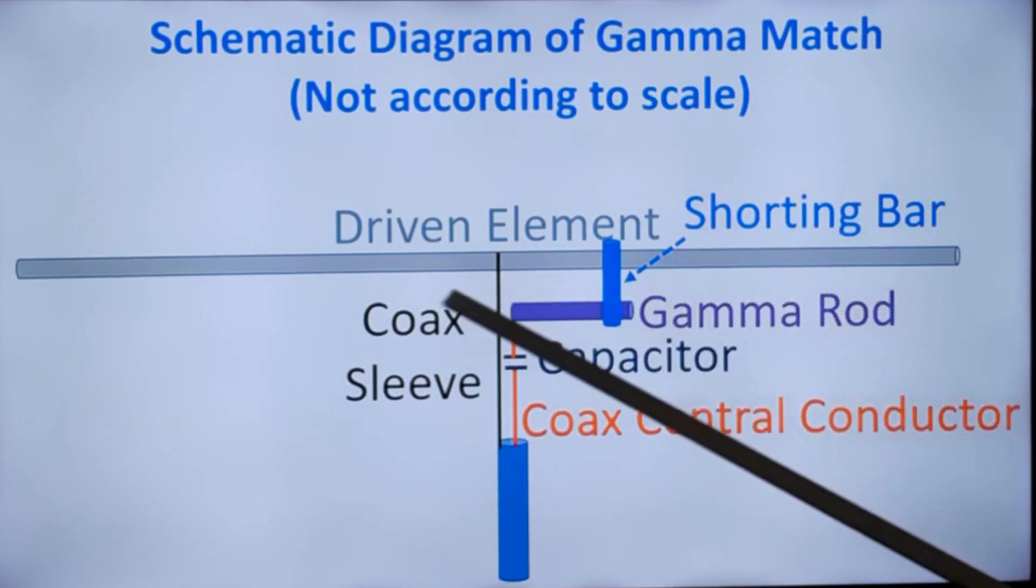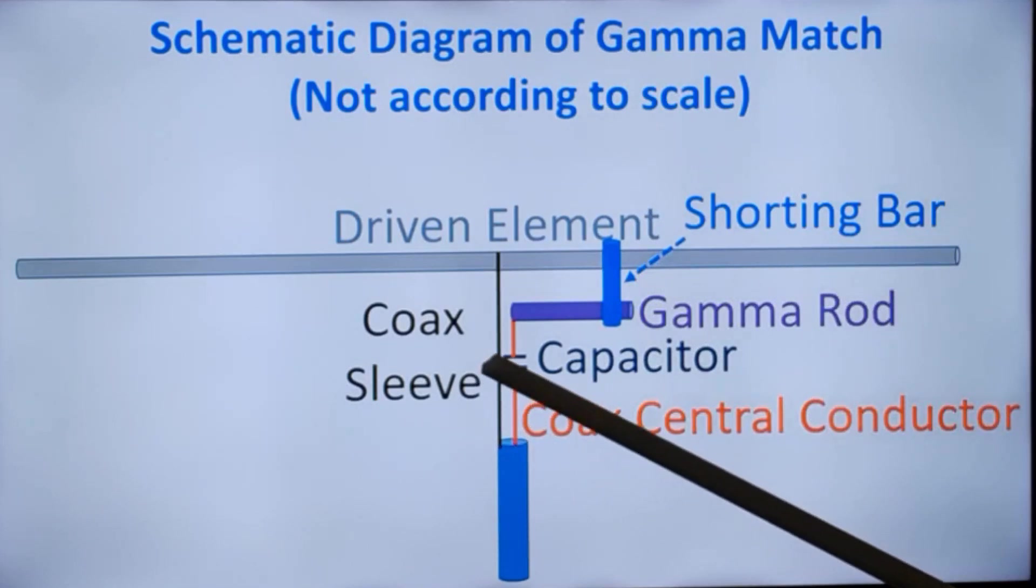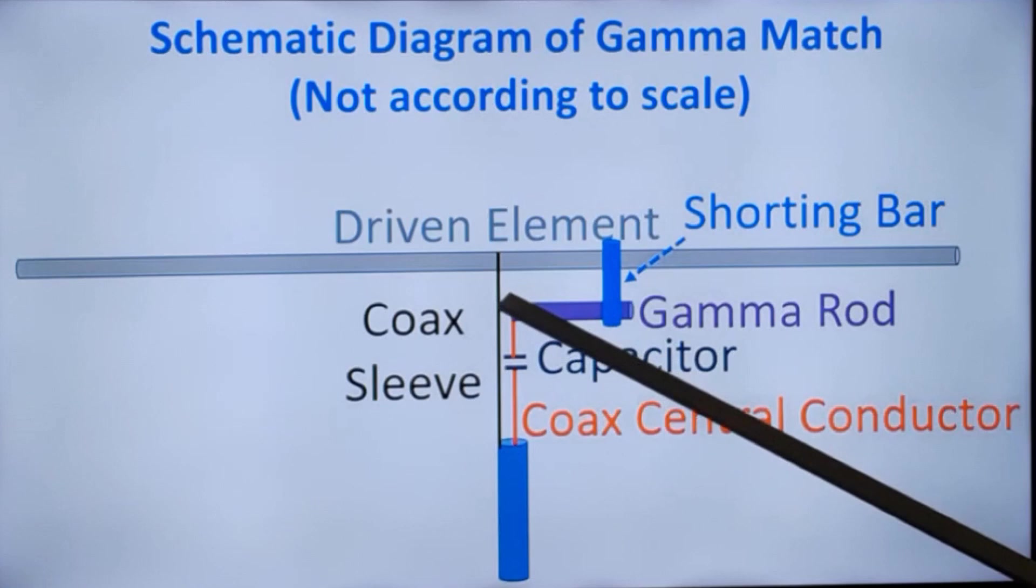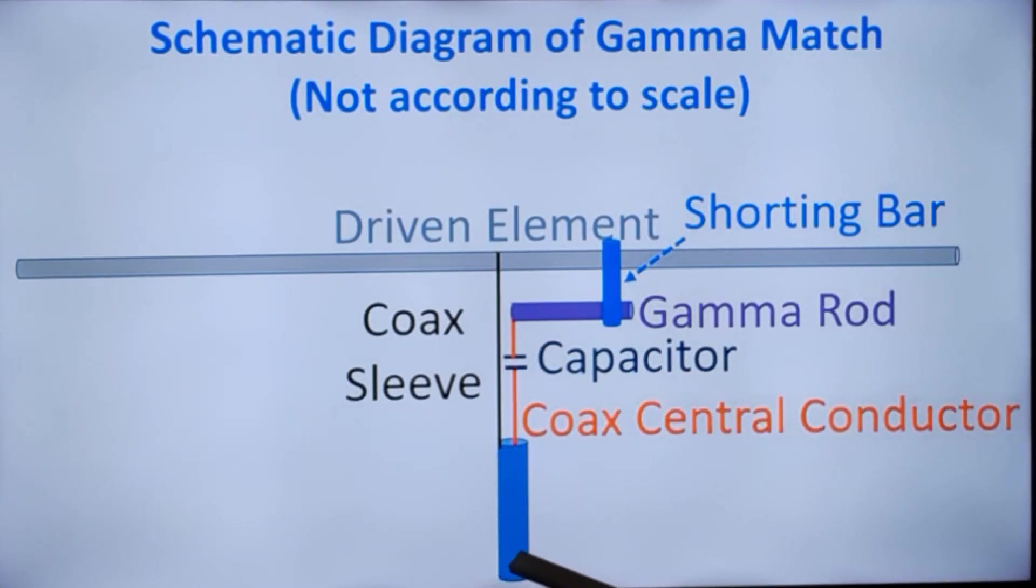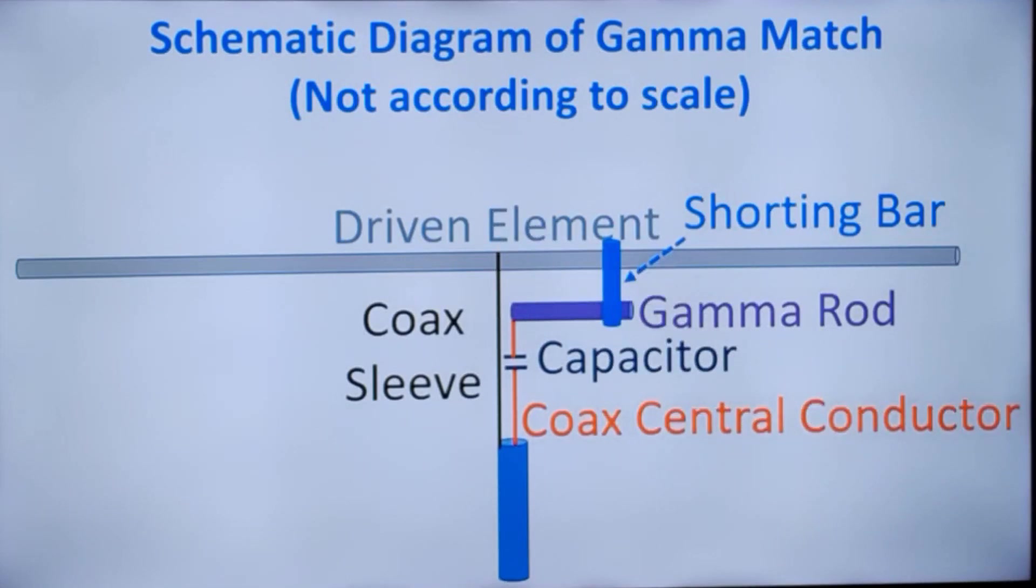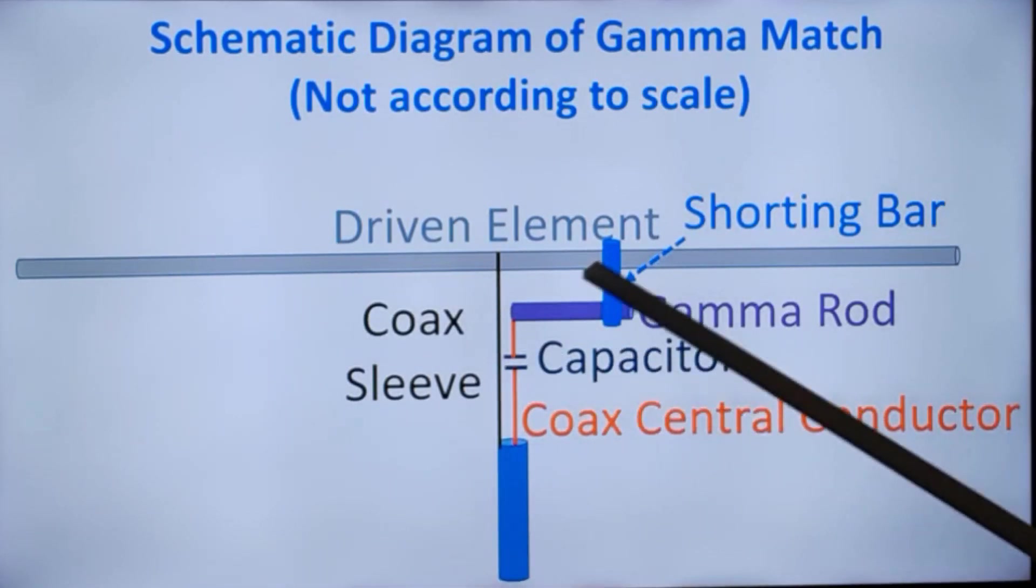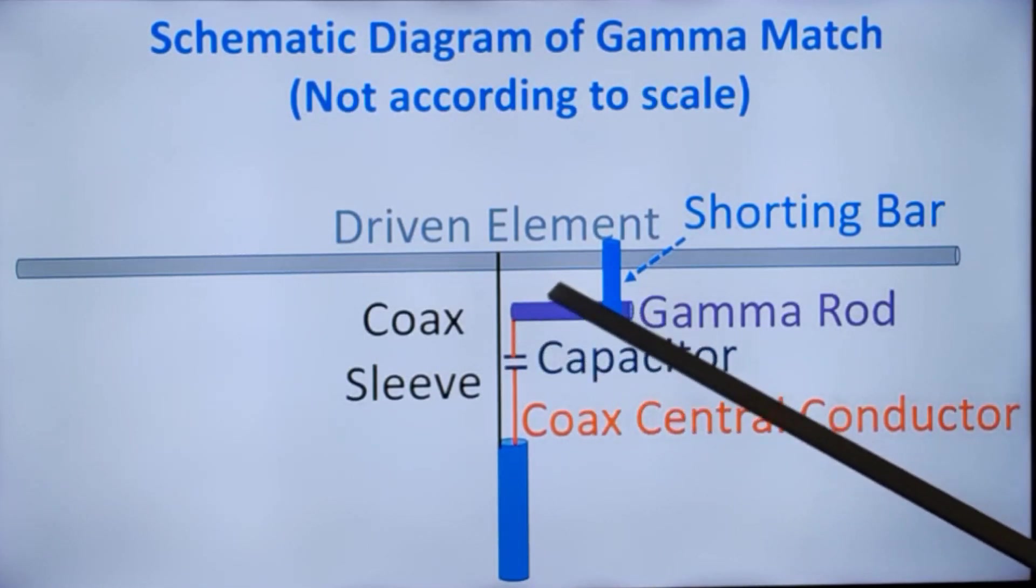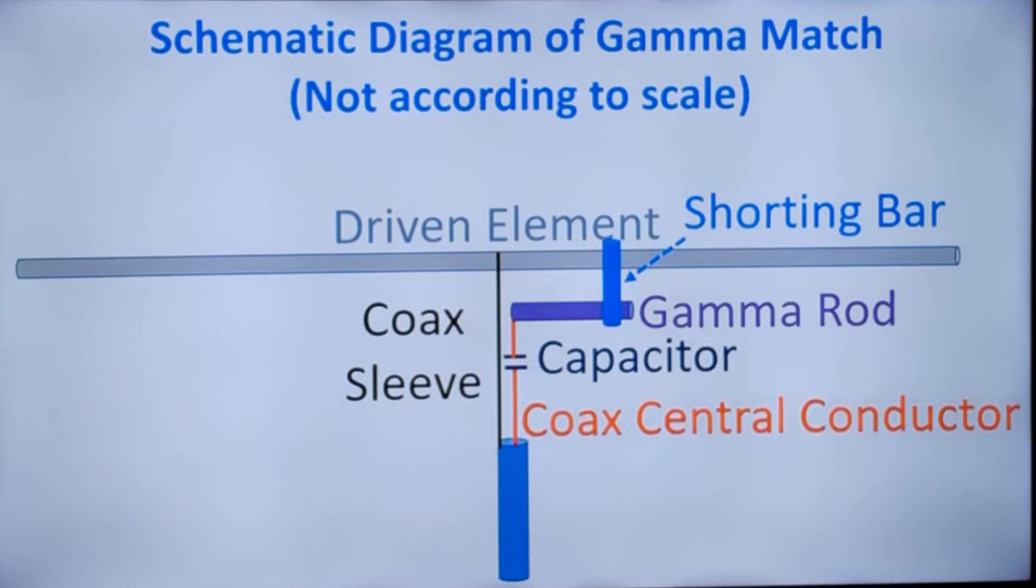The driven element can be mounted on the boom and connected to the sleeve of the coax. This portion is a zero current region. You need a capacitor to tune out the inductance of this segment, the connecting segment. That will be about seven picofarads for one meter length of the antenna. Depending on the length of the antenna, whether it is VHF or UHF, the capacitance will vary.